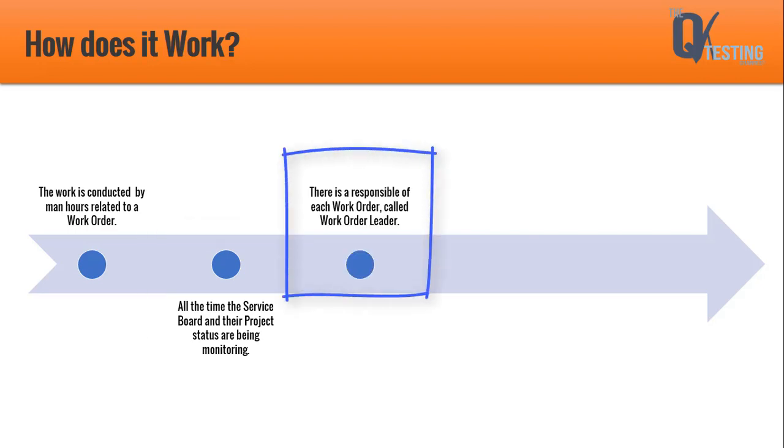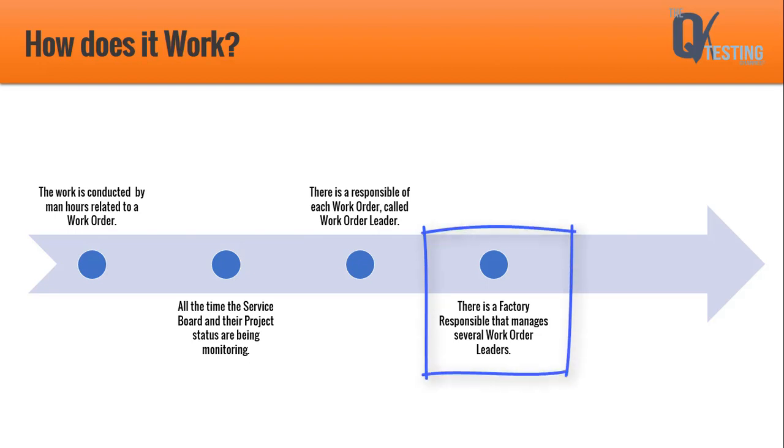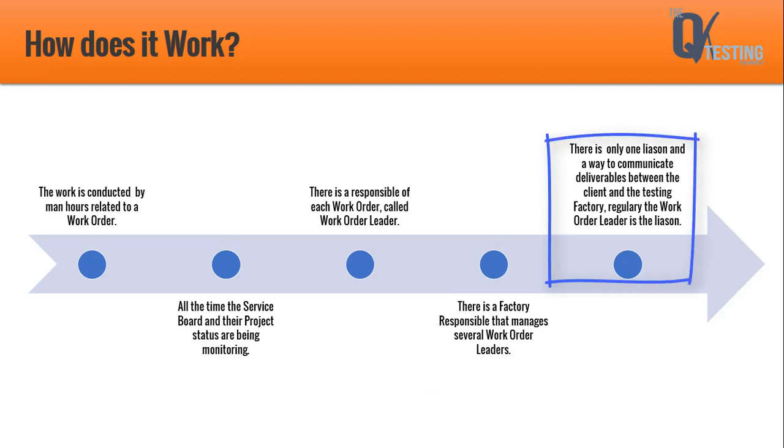There is a person responsible for each work order called the work order leader. There is a factory responsible that manages several work order leaders. There is only one liaison to communicate deliverables between the client and the testing factory. Regularly, the work order leader is the liaison.